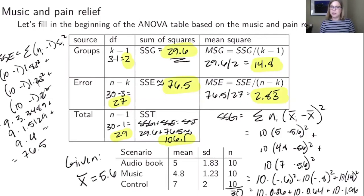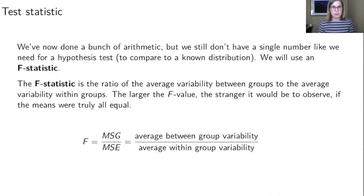We're getting closer to a test statistic but we're still not quite there. We still have a bunch of numbers. We need a single number to do a hypothesis test and what we're going to use is called the F statistic. And the F statistic is the ratio of the variability between the groups to the variability within the groups. So it's going to be the MSG over the MSE and if we have a really big F value it would be very strange to observe if the null hypothesis were true. And in the case of ANOVA our null hypothesis is always that all the means are equal. So the larger the F value the stranger it is. Just like the larger the z score or the larger the t value the stranger it is, the larger the F value the stranger it is.